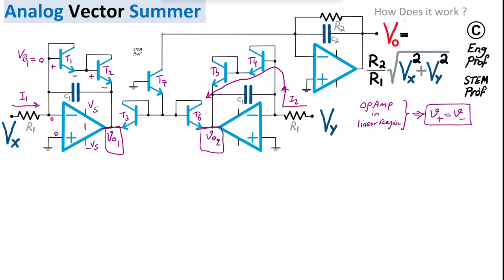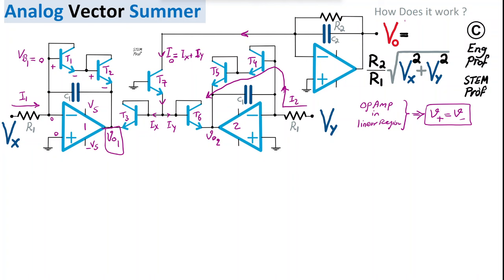Vout1 and Vout2 at the outputs of the two op-amps define effective currents Ix and Iy, whose sum passes through transistor T7 by KCL. This summed current, Iout = Ix + Iy, then passes through resistor R2. The third stage acts as a current-to-voltage converter.